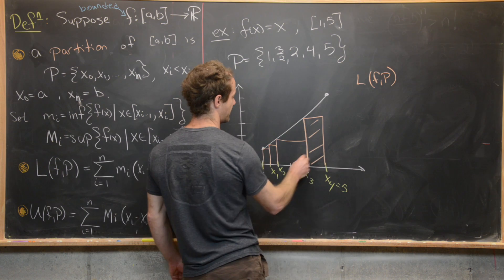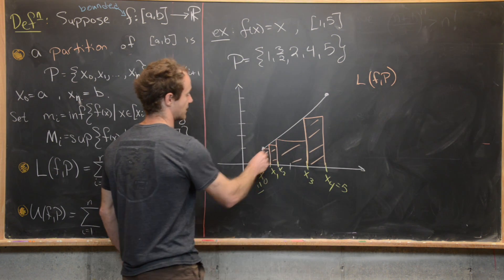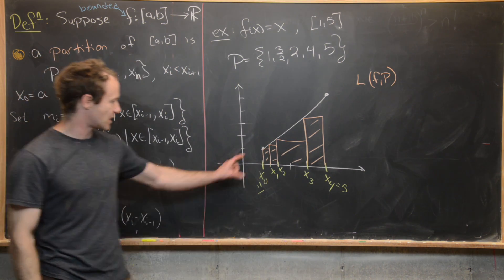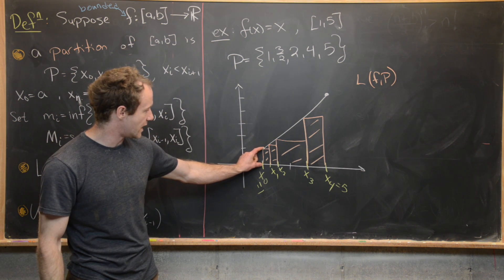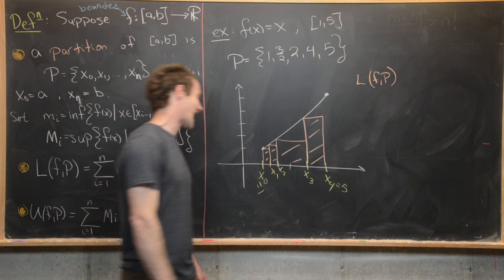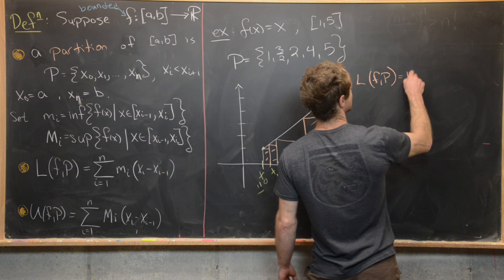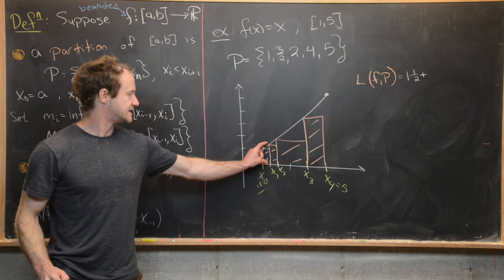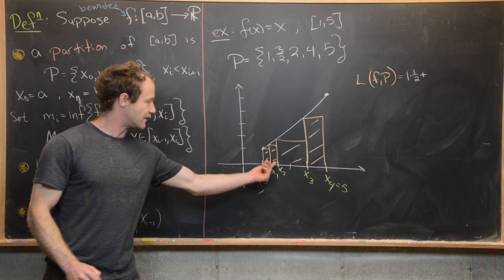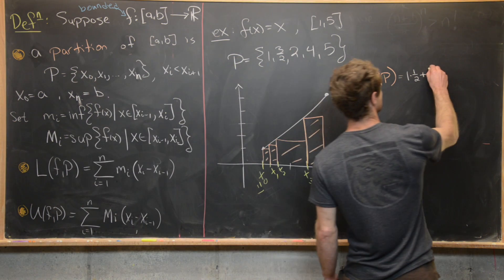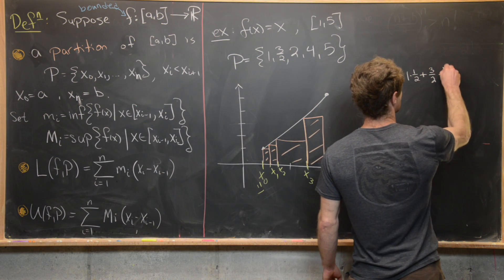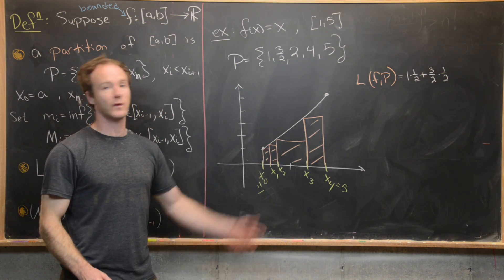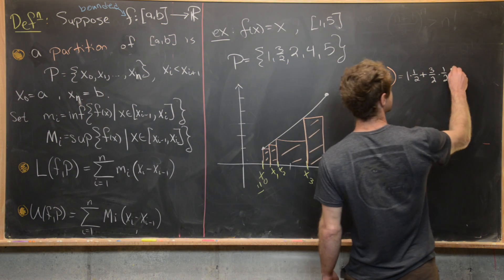So our L(f,p) will be this area right here. So now we can calculate all of those parts. So notice the height of this first rectangle is 1 and the width is 1/2. So this is going to be equal to 1 times 1/2 plus the height of this next rectangle is 3/2 and the width is 1/2. So that's going to be plus 3/2 times 1/2. Then the height of the next rectangle is 2 and the width is 2. So that's going to be plus 2 times 2.